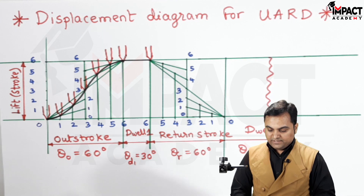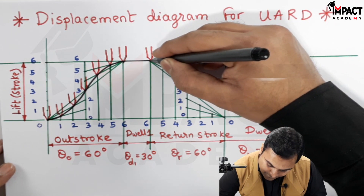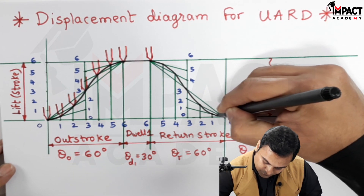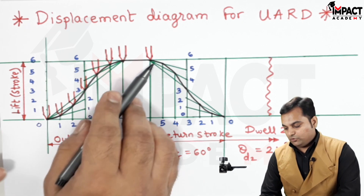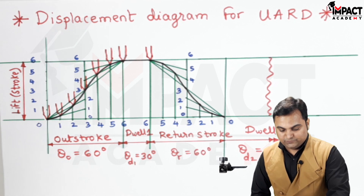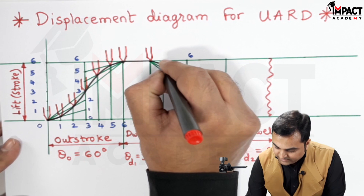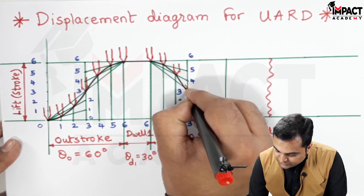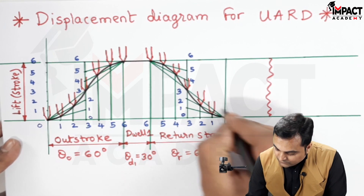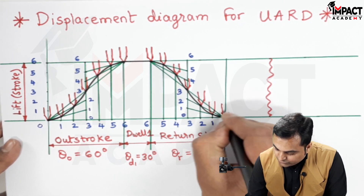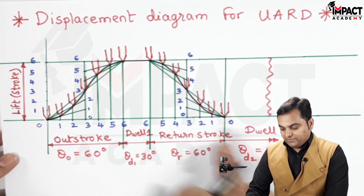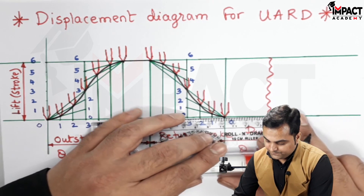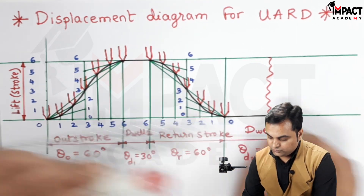Joining all these points in order and connecting with a smooth curve gives the follower return with UARD motion. The knife-edge follower returns by following these points back to its original position at 0, then remains at that position for the remaining 210 degrees, which is the second dwell.